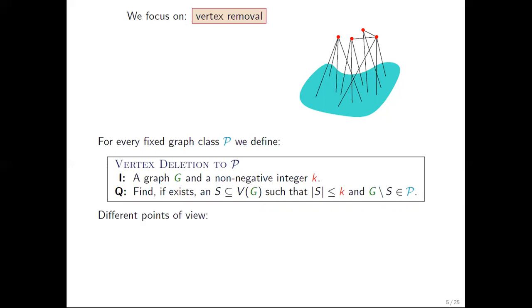This problem can be reformulated in terms of recognizing k-approximations of P, meaning our graph is k vertices away from the target property P. The figure above shows a graph only a few red vertices away from having the blue property. Another way to view this problem is to find a vertex set that, when removed, gets rid of all obstacles to the target property P.